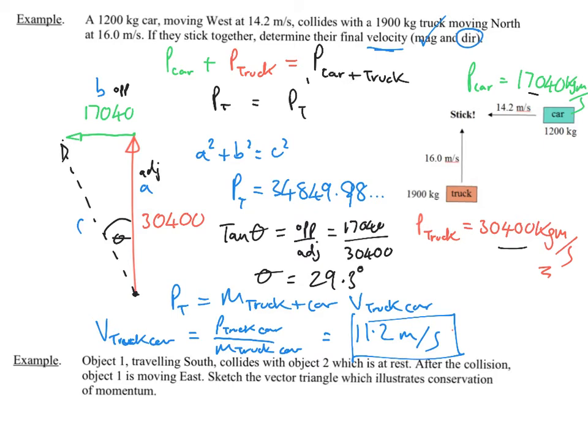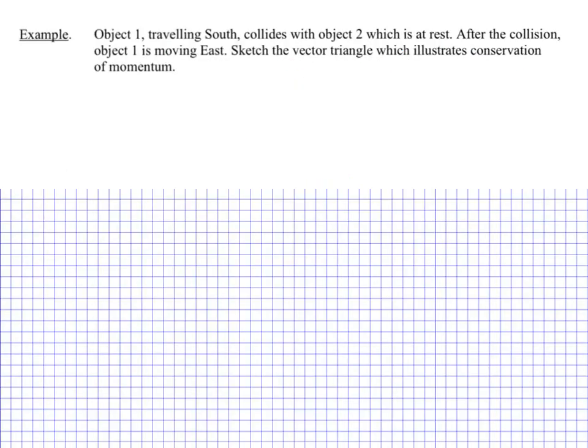And if I think about my Cartesian plane, this is west, this is north, that angle is coming from the north, so it's going this way, from this arrow, this direction. So it's going to be west of north. So that's 29.3 west of north. That's my angle, which is my direction.